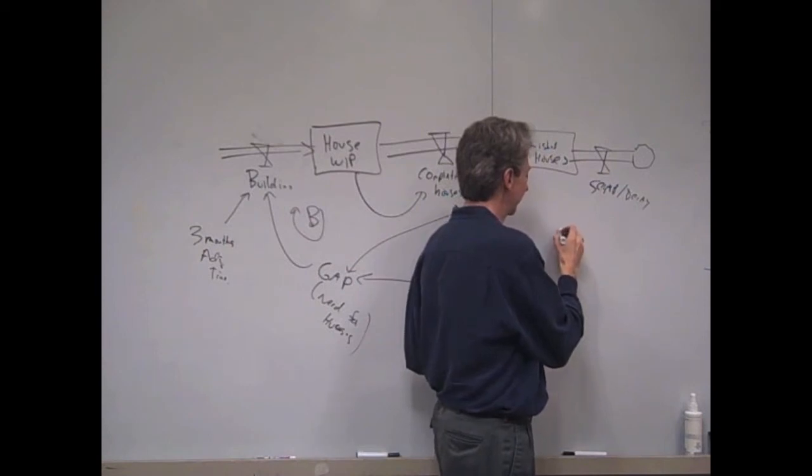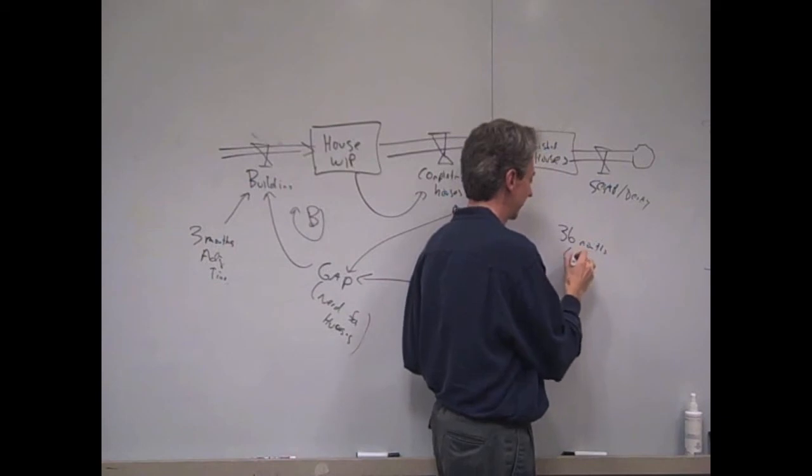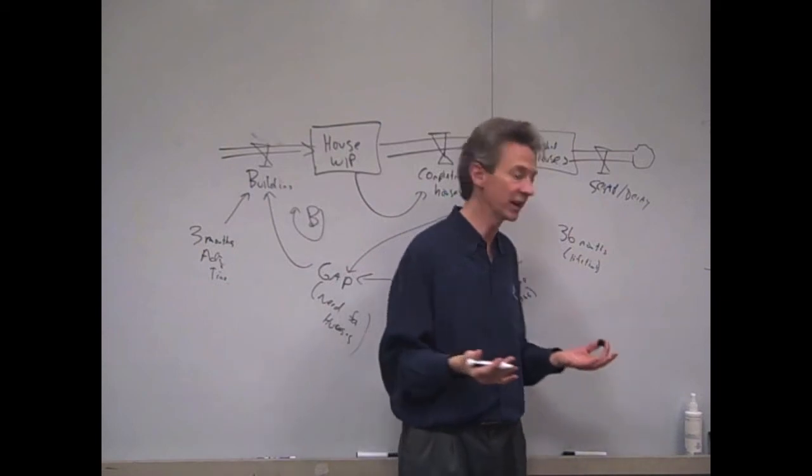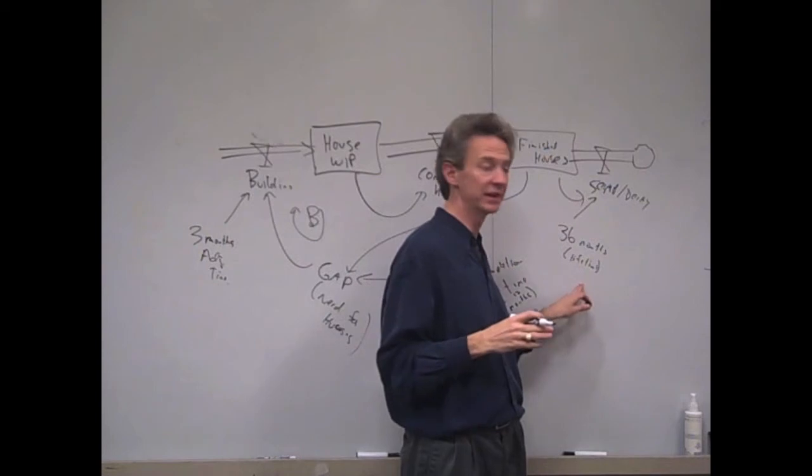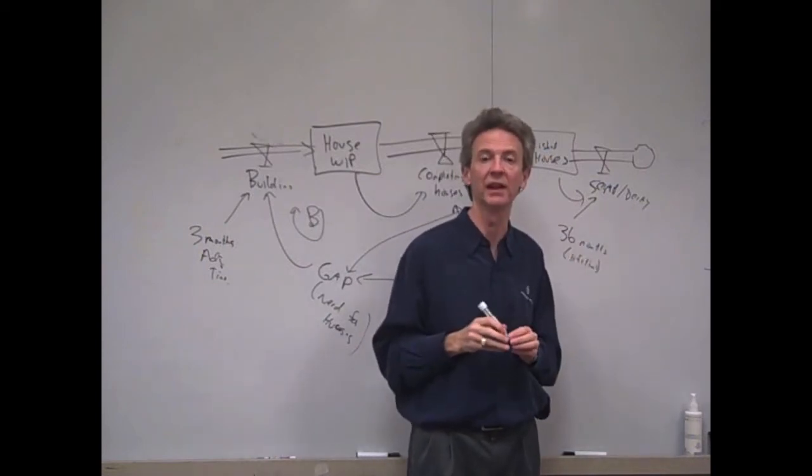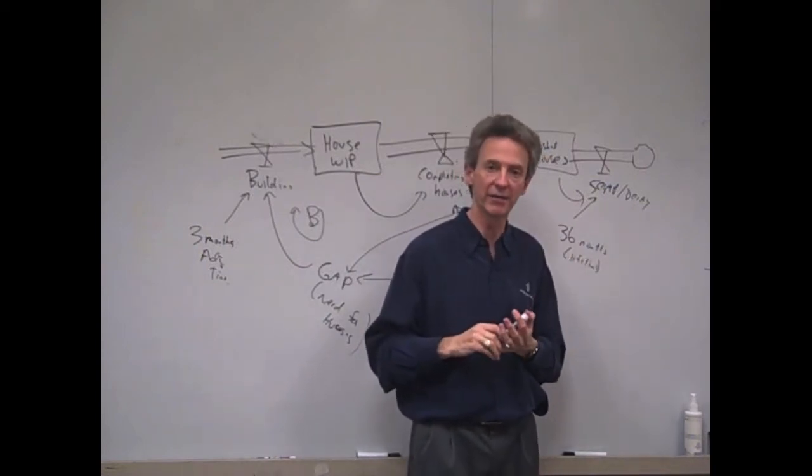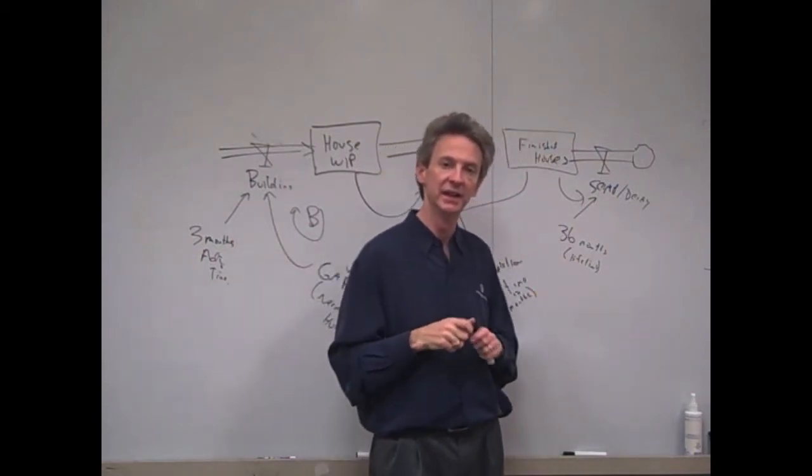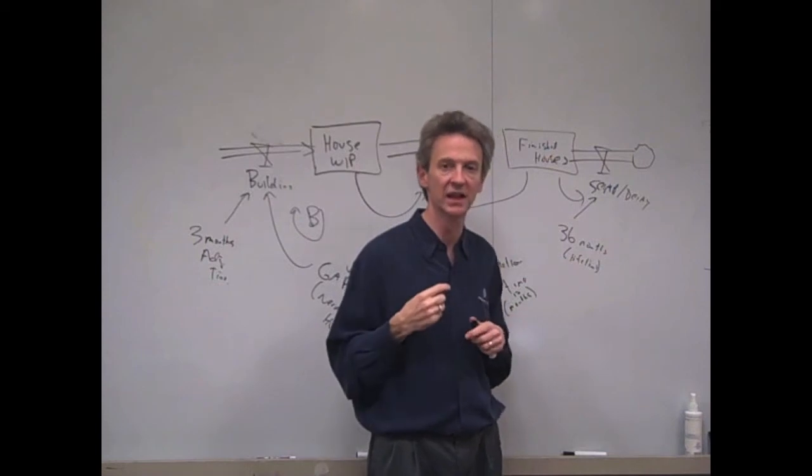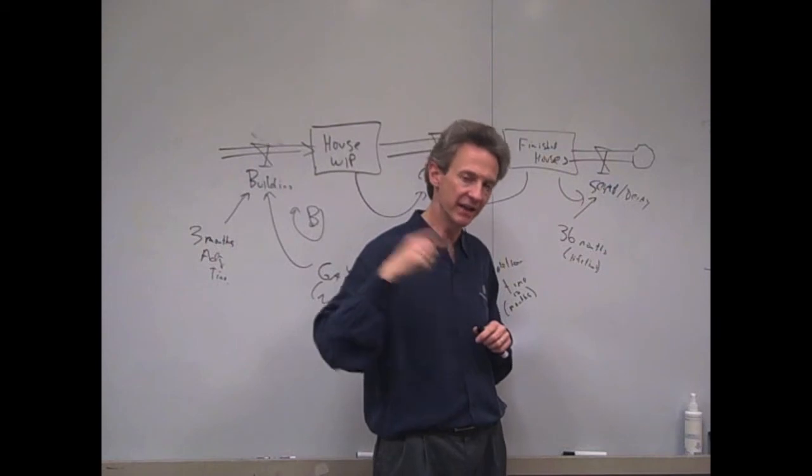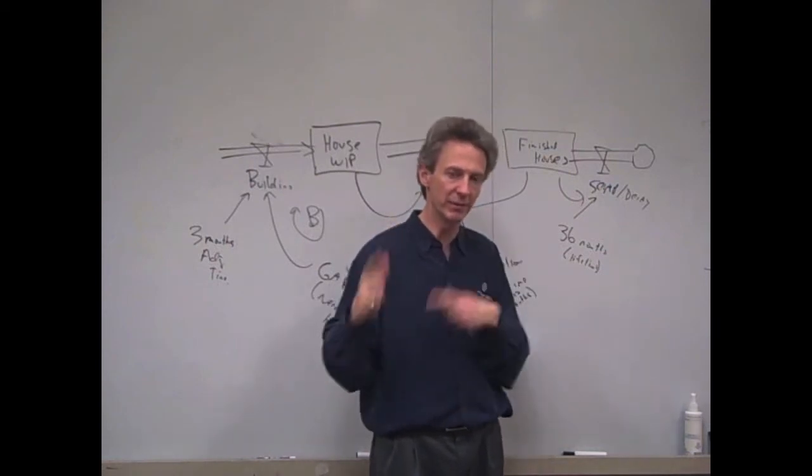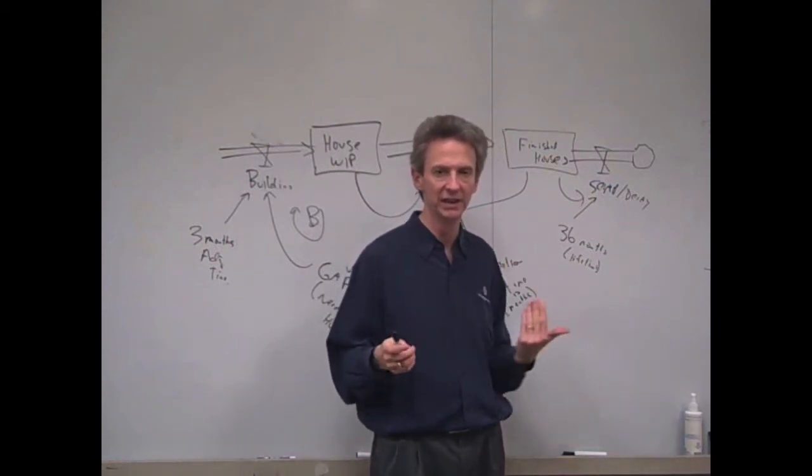And the average lifetime is three years. So we'll do 36 months is the average lifetime. And again, the same kind of formulation. We're going to take the stock divided by the 36 months, and that will give how many are decaying per month. So again, if houses last 36 months, if you turn that around, 1 36th of those houses are going to decay each month. And mathematically, that is equivalent. It might sound funny, but that's been proven to be equivalent.